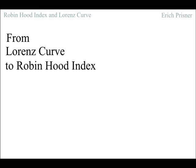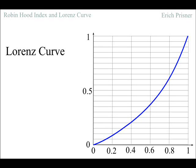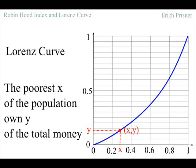There is another way to obtain the Robin Hood index provided we don't have the distribution of money but rather the Lorenz curve. Remember that the Lorenz curve is a curve in the unit square where the x values indicate parts of the total population and the y values indicate parts of the total money. If the Lorenz curve goes through the point (x,y), then the poorest x of the population own y of the total money.